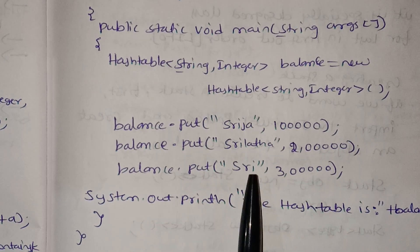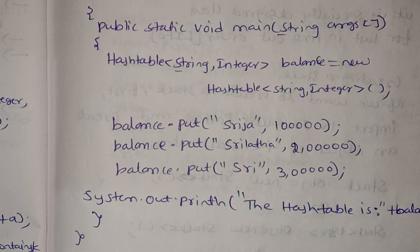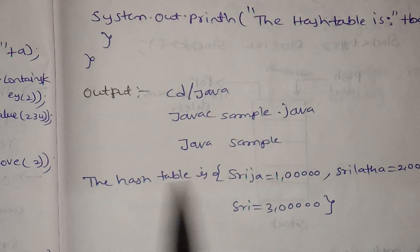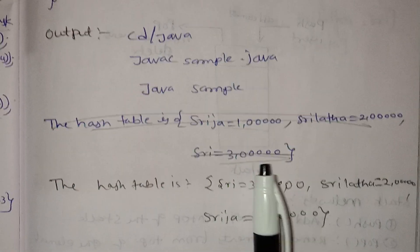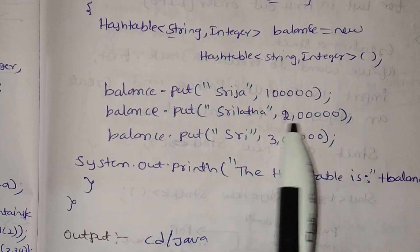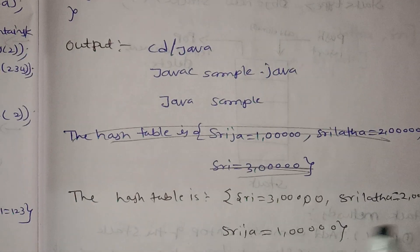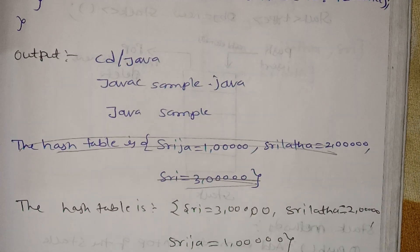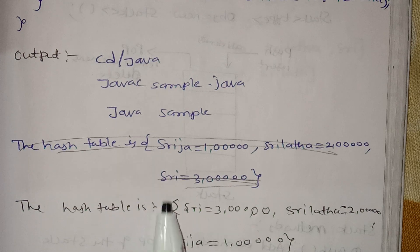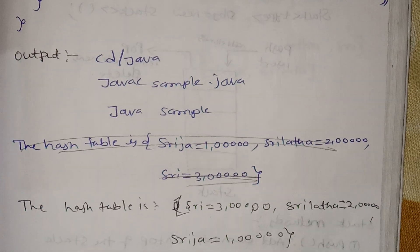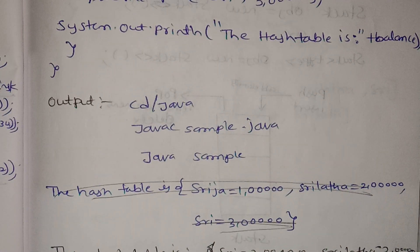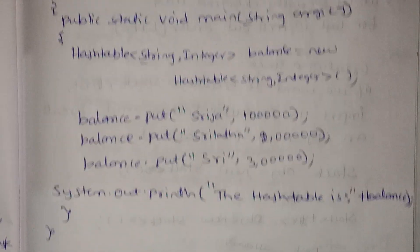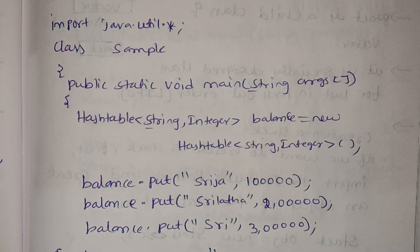The output shows 3 equals to 3. Sorry for this mistake. First we have key 3, then key 2, then key 1. Then we have key 5, then key 3. This is the output of the hash table program. Thank you for watching my video. Please like and share, subscribe and share.